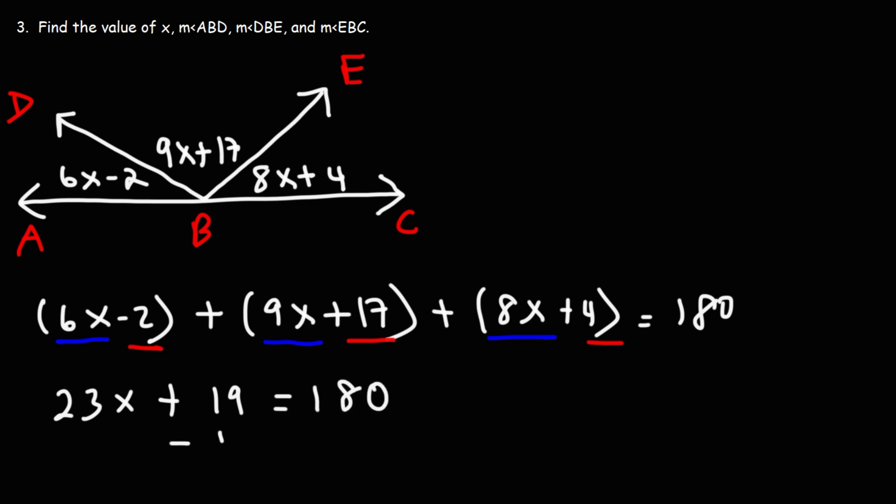So now we can subtract both sides by 19, and we can bring down the 23X. So we're going to have 23X is equal to 180 minus 19, which is 161. After that, we could divide both sides by 23. 161 divided by 23 is 7.